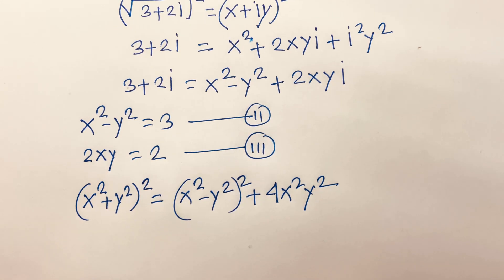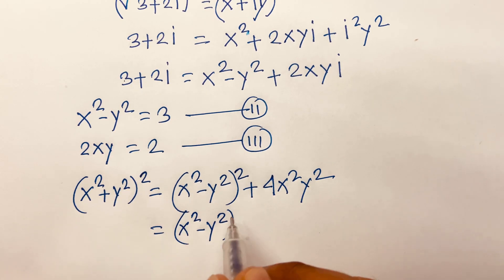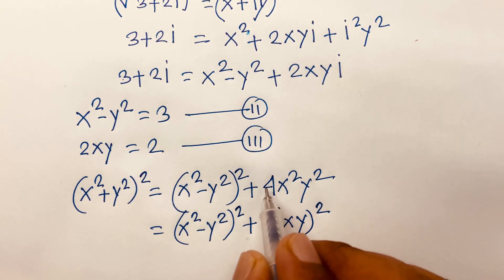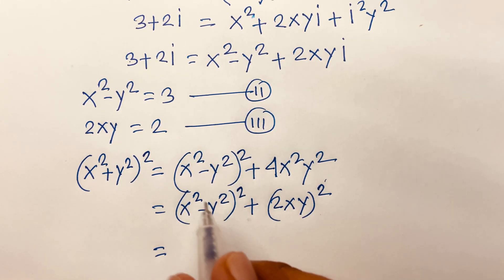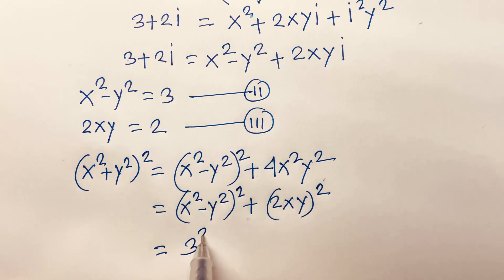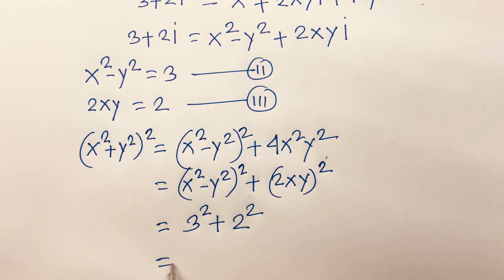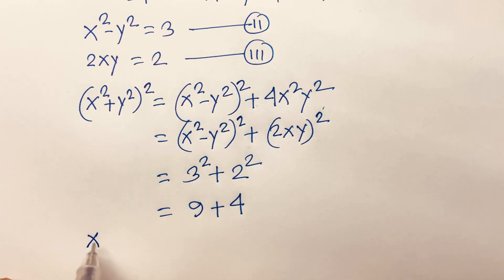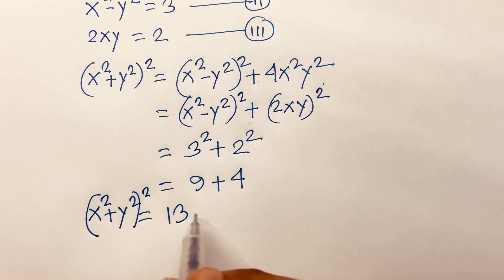This equation becomes (x² minus y²)² plus (2xy)². Since x² minus y² equals 3, we get 3² plus 2², which is 9 plus 4. So (x² plus y²)² equals 13, meaning x² plus y² equals √13.